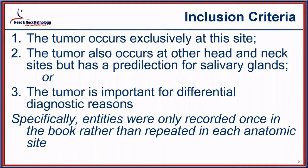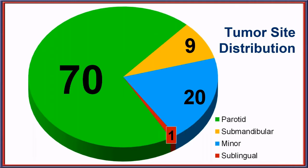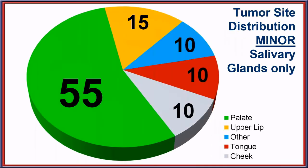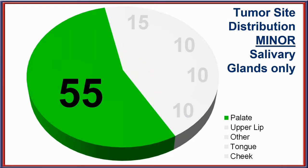If you think about how the book was arranged, the classification asked: did a tumor occur primarily at this location, is it important in the differential, and does it have a predilection for this site? Entities were recorded only once to reduce the book's volume. Regarding tumor site distribution, major salivary glands — parotid and submandibular — account for about 80% of all tumors. For minor salivary glands, 55% occur in the palate.